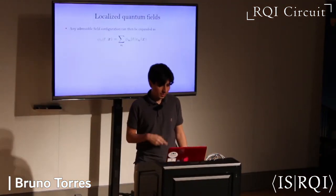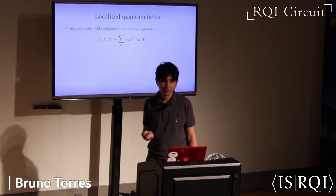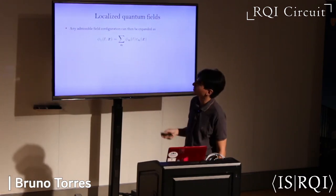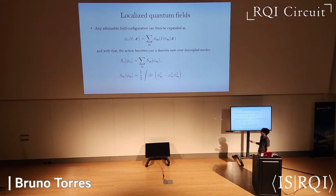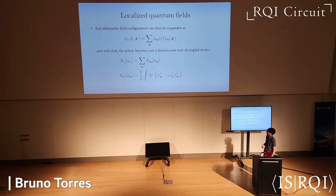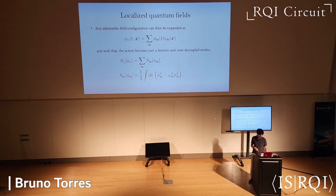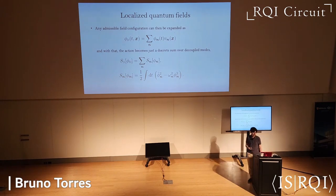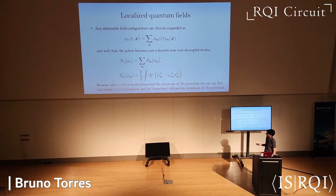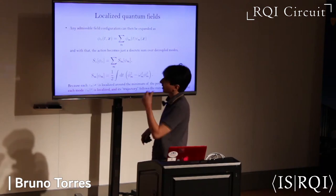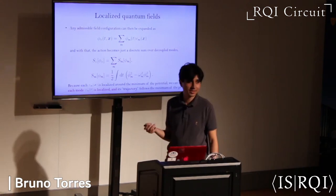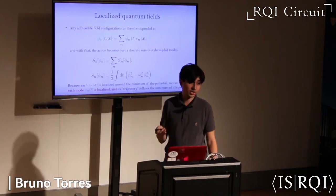I can expand any field configuration at each time slice in terms of that basis. Plugging that into the action, I get a simple decoupled sum of a discrete number of modes of the field, each described by a simple harmonic oscillator Lagrangian. The confining property of the potential means that each of those mode functions is localized around the minimum of the potential, so each mode is localized, and its trajectory is dictated by the location of the potential minimum.